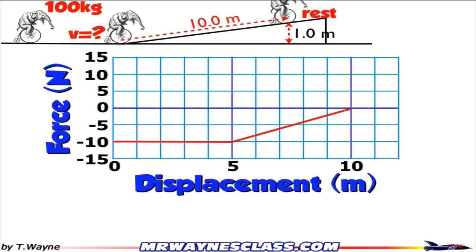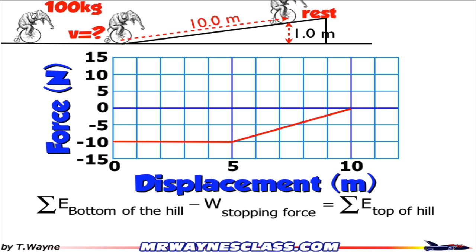Define the initial velocity at the bottom. To begin with, my initial setup says the total energy at the bottom of the hill minus the work of the stopping force equals the energy at the top of the hill. But remember, I can't just do the work of the stopping force anymore because it varies. So instead, I've got to have the work of the graph.